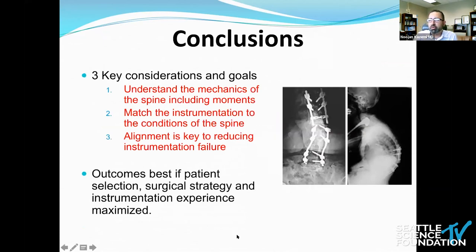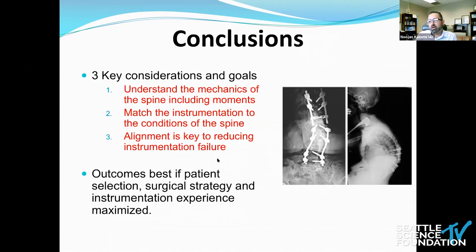In conclusion, there are really three considerations and goals. You have to understand the biomechanics of what you're applying a construct to, and match the instrumentation to the conditions of the spine — particularly bone density. If you want to reduce instrumentation failure, alignment is key, both to achieving good spinal pelvic parameters for the patient and quality of life indices, but also longevity of the implants. Your outcomes are best if you select the patient well, your surgical strategy is robust, and you maximize the instrumentation you select to achieve the goal you want.